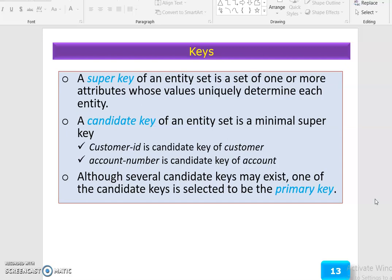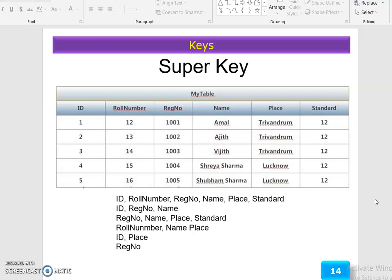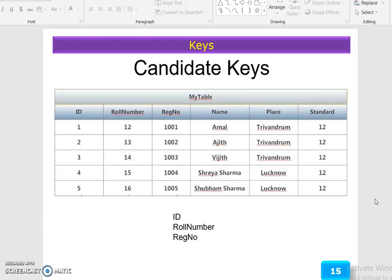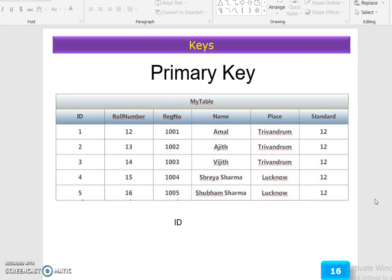Although several candidate keys may exist, one of the candidate keys is selected to be the primary key. For example, with super key attributes like ID, roll number, register number, name, place, and standard, a particular row can be approximately identified. The candidate keys are ID, roll number, and register number. The primary key is ID, because it is unique and not common to all.